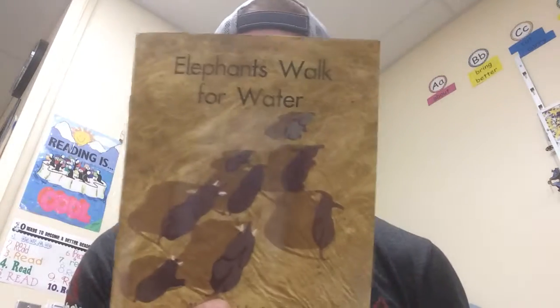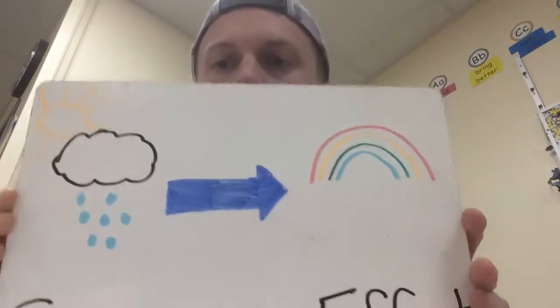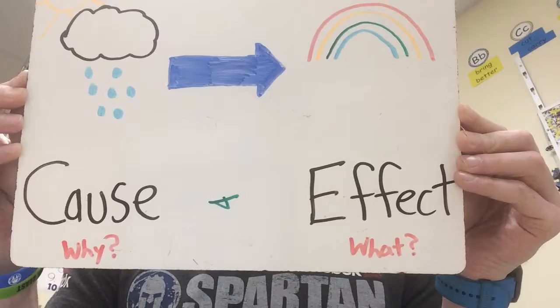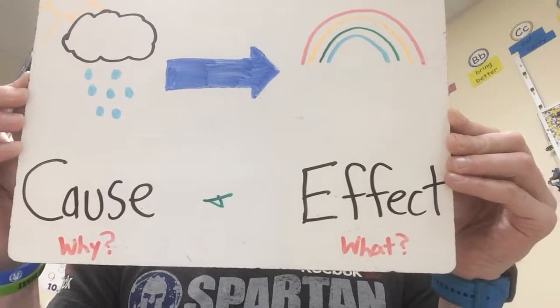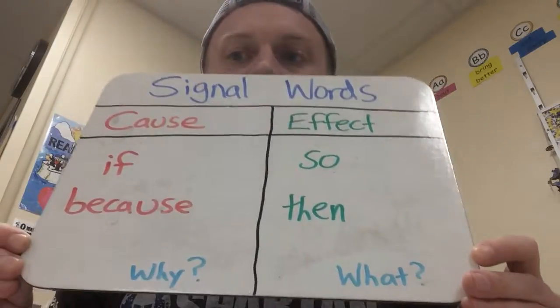Hey there again, folks. We are back for day three on the story Elephants Walk for Water, and continuing, of course, with our comprehension skill of cause and effect. Cause is why an event happened, and the effect is what was the event that actually happened. I also want to review when you are reading — remember that there are signal words that will give you clues as to if you are reading about a cause or an effect.